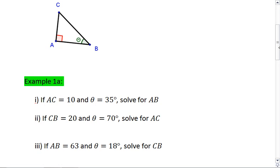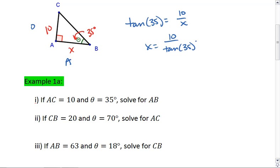Using our triangle above, we could say that AC is 10, and that theta is 35 degrees, and we want to solve for AB. In this case, we have opposite and adjacent, meaning we want to use tangent. We're going to say tan of 35 equals 10 over x. x equals 10 over tan 35. Plug it into our calculators, and we get 14.28.